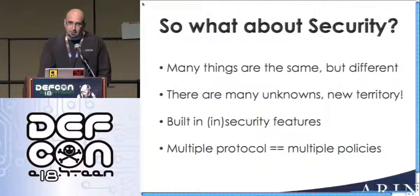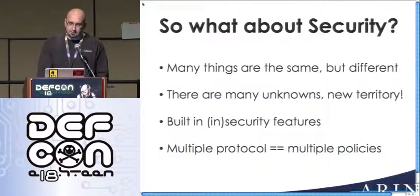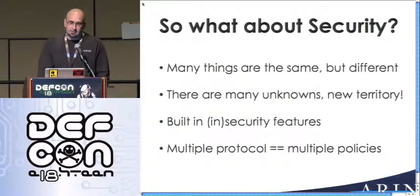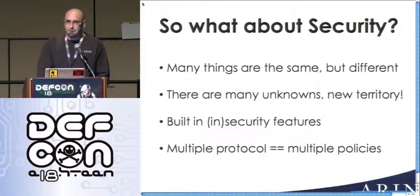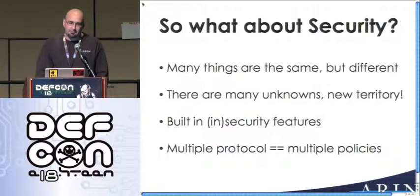I want to talk a little bit about security — this is DEF CON, and I think everybody here likes to think about it. We learned a lot, and it's worth noting how security changes in V6. Many things are the same — John hinted at this. TCP is still TCP, UDP is still UDP, you still have source and destination, QoS and other mechanisms. If you understand that in V4, you understand it in V6.